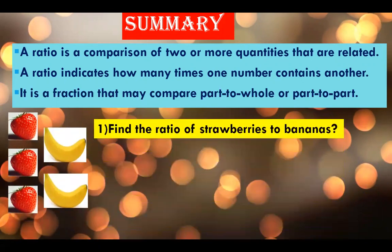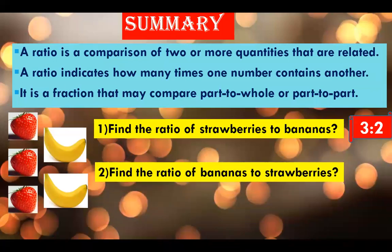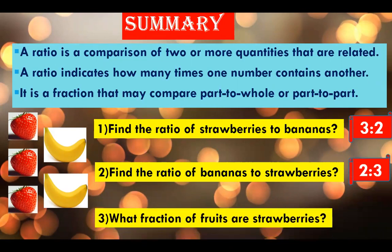Find the ratio of strawberries to bananas. It's 3 is to 2. Find the ratio of bananas to strawberries. It's 2 is to 3. What fraction of fruits are strawberries? It's 3 by 5.